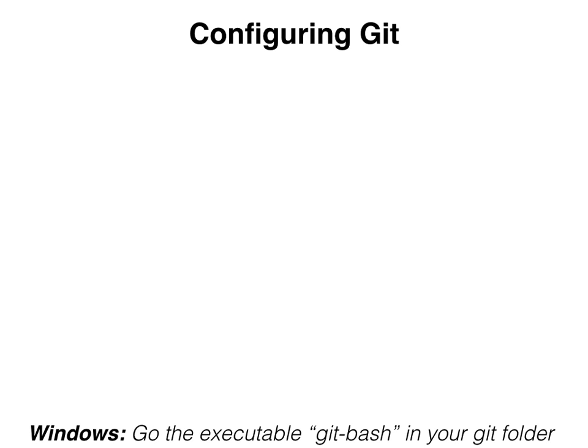The first thing we're going to be doing is configuring git. Presumably at this point you should have already had git installed, and we want to make sure you've actually done this. If you're on a Unix-based machine, go open the terminal, and if you're on a Windows machine, go into the folder where you downloaded git and look for the executable git-bash. I'll give you a moment now to do that — please pause the video if necessary.